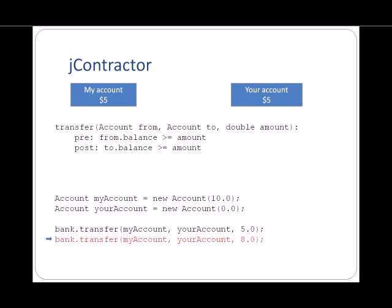Now let's transfer another $8 from my account to yours. JContractor checks the precondition. Now we have a problem because the account does not contain enough money to satisfy the request. So the precondition is violated and JContractor halts the program with an error message.